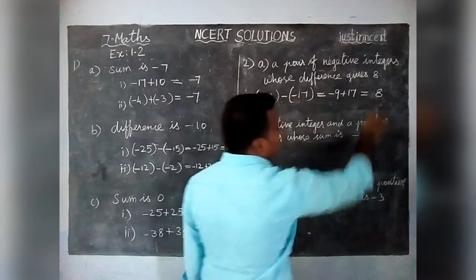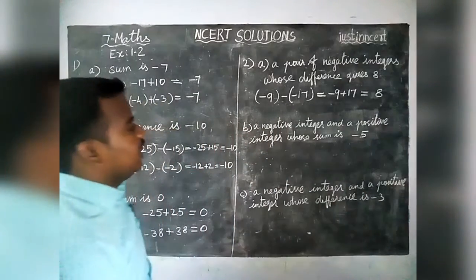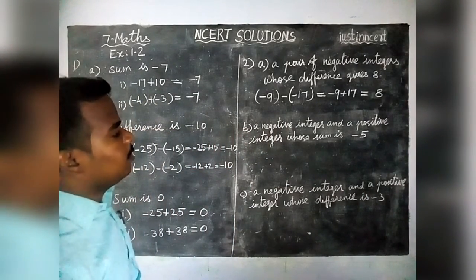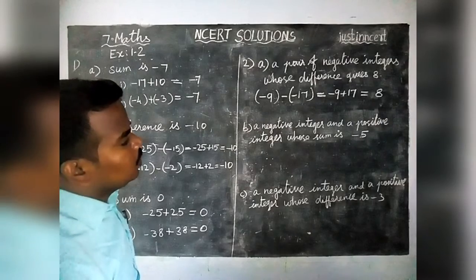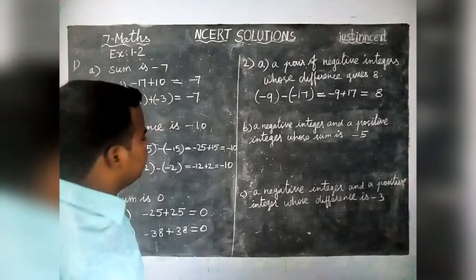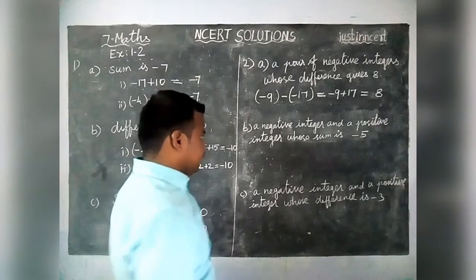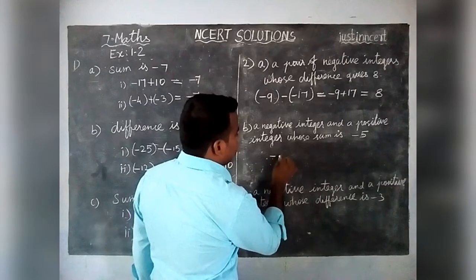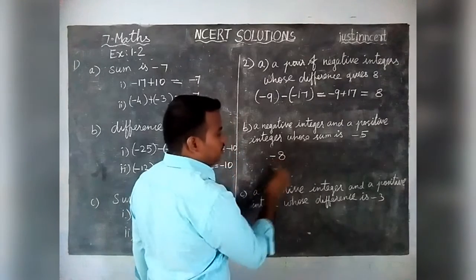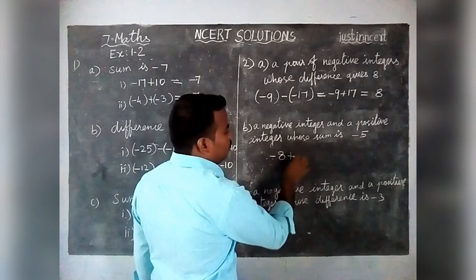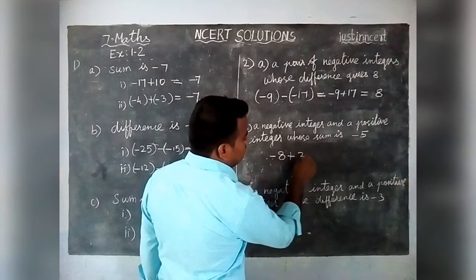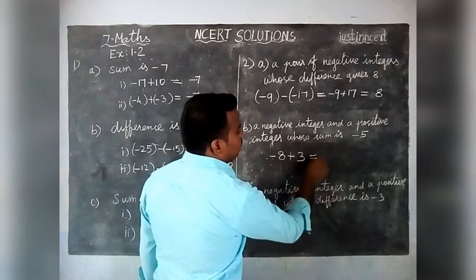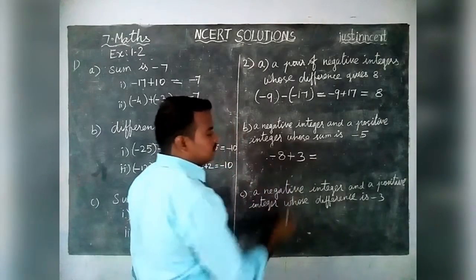Next, part B: a negative integer and a positive integer whose sum is equal to minus 5. We add a negative number and a positive number: minus 8 plus 3. The difference between these two is minus 5. We can write any number of such examples.